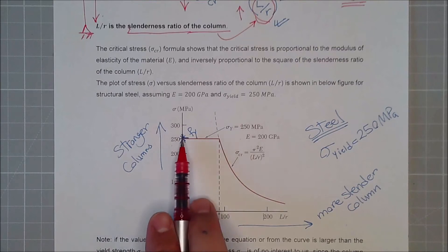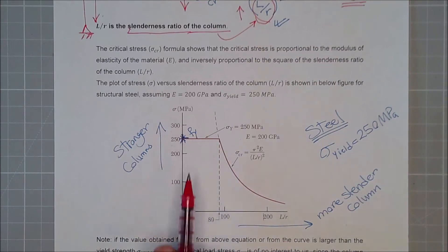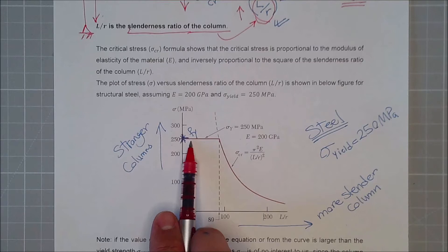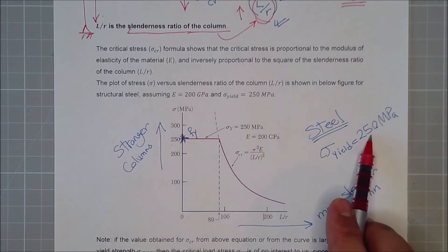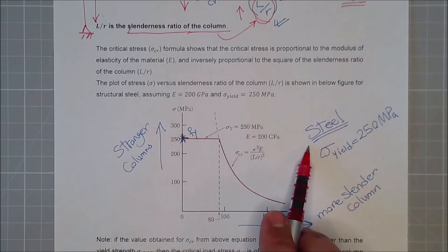Now, assuming that this is for the same material, so Fy is the yielding point, 250 megapascals, same material, all steel.